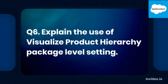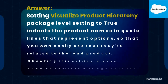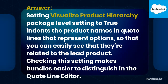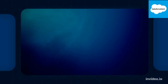Q6. Explain the use of Visualize Product Hierarchy Package Level Setting. Answer. Setting Visualize Product Hierarchy Package Level Setting to true indents the product names in quote lines that represent options, so that you can easily see that they're related to the lead product. Checking this setting makes bundles easier to distinguish in the quote line editor.